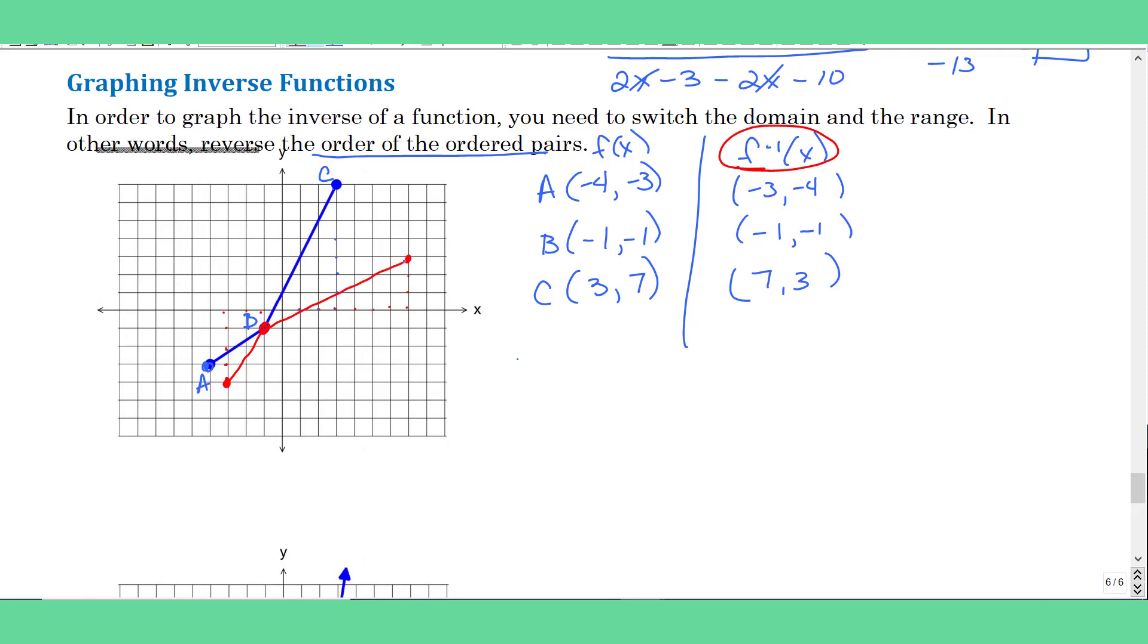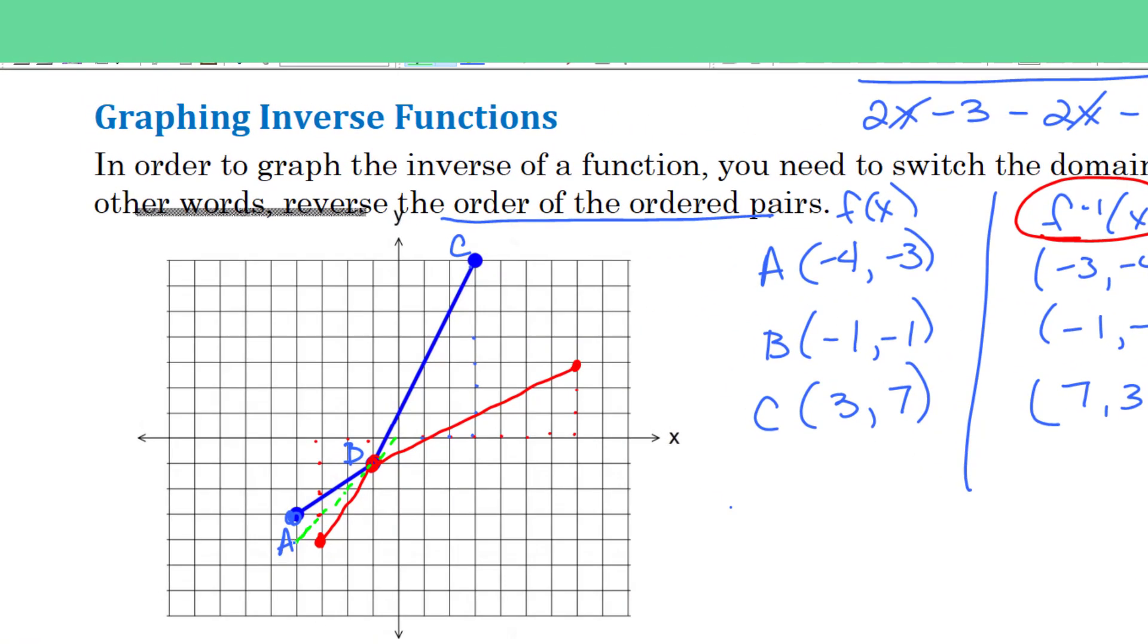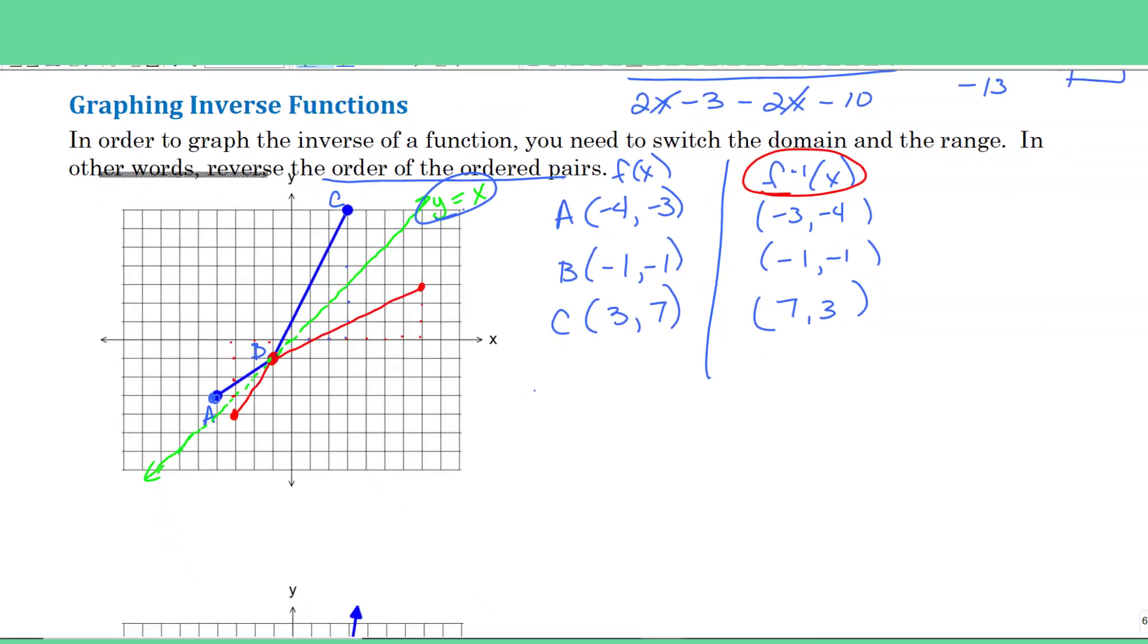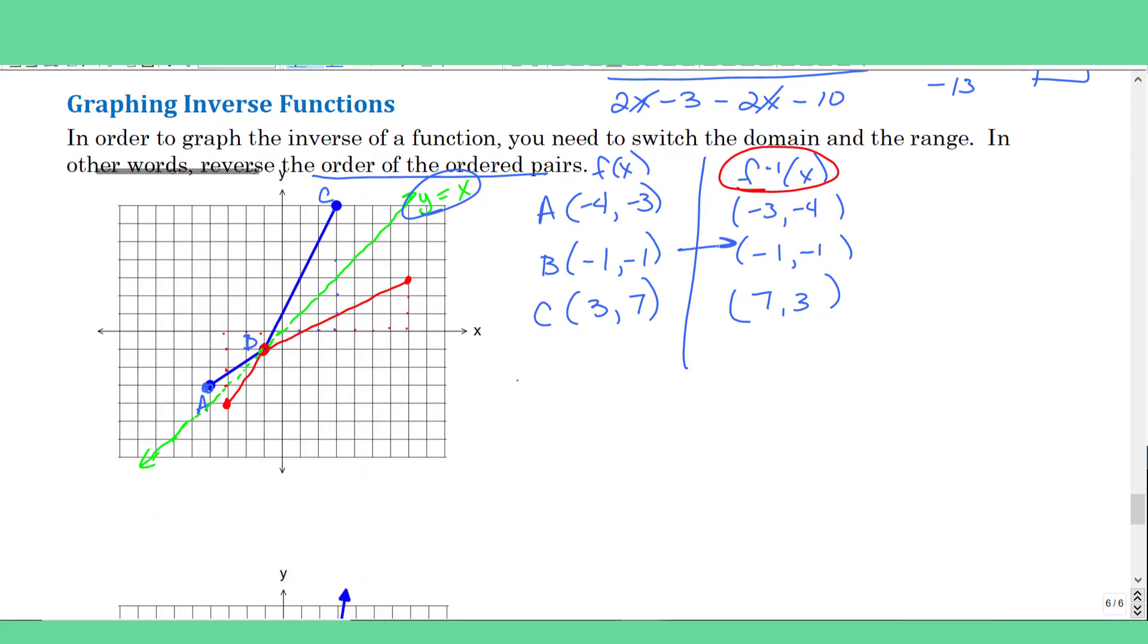That looks like a bow tie. But I also want you to notice there's a line of symmetry. As in, if I held up a mirror along the line y equals x, it would be a reflection. That's what inverses look like. They should be a reflection across the line y equals x. So that's why that point stays the same, because x and y were the same values.